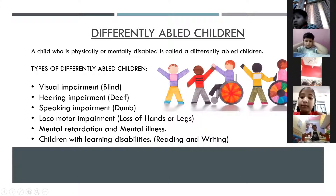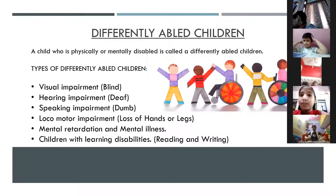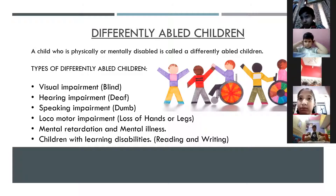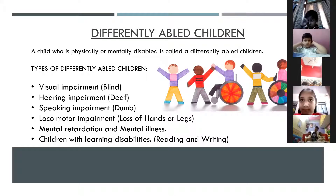We will start with our next topic: Differently Abled Children. In our previous class, we discussed inherent traits, identical twins, and fraternal twins. In this topic, we will continue with Differently Abled Children. A child who is physically or mentally disabled is called a Differently Abled Child — kids who are physically or mentally not able to do any work.